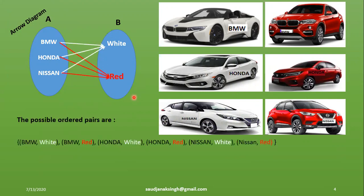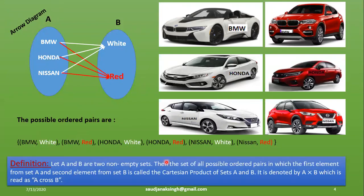So we get A cross B: BMW-white, BMW-red, Honda-white, Honda-red, Nissan-white, and Nissan-red. This list is complete because all possible choices pair every car in set A with every color in set B. We conclude that for A cross B, two non-empty sets are required, and the set of all ordered pairs where the first element is from set A and the second from set B is called the Cartesian product A cross B.